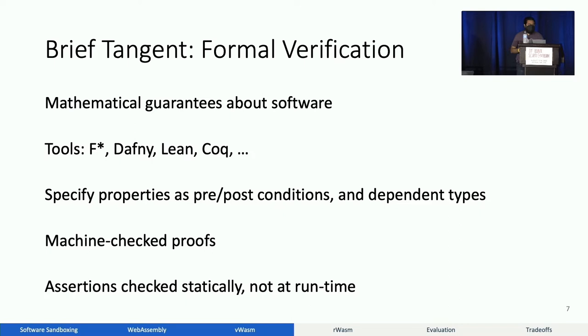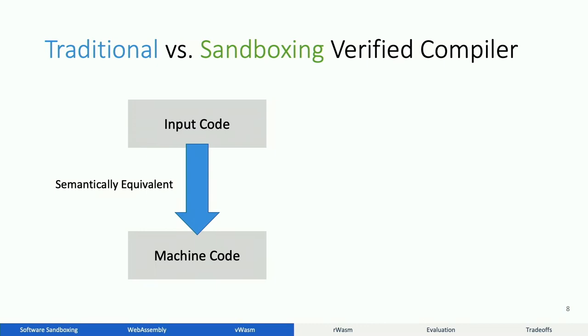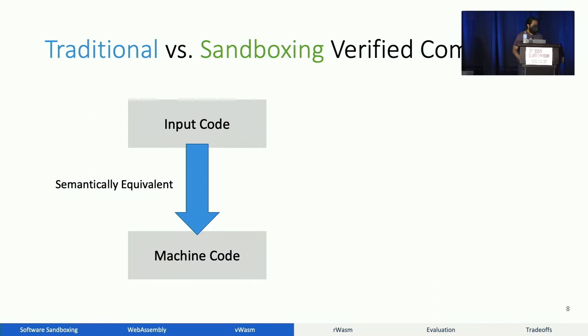Since they're checked statically, these assertions hold for any possible inputs to your software. You may have heard of some traditional verified compilers such as CompCert. A traditional verified compiler shows that the output code's behavior is equivalent to the behavior of the input code. Unfortunately, this means it's restricted to safe input code turning into safe machine code, and it says nothing about unsafe or malicious input code.